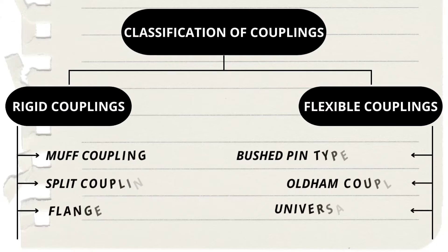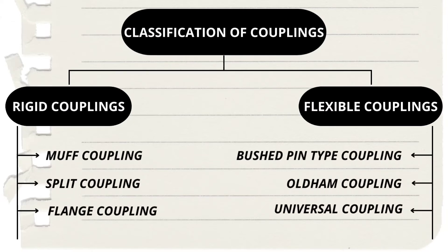Classification of couplings. Rigid couplings — types of rigid couplings are muff couplings, split couplings, and flange couplings. Flexible couplings — types of flexible couplings are bushed pin type couplings, Oldham couplings, and universal couplings.